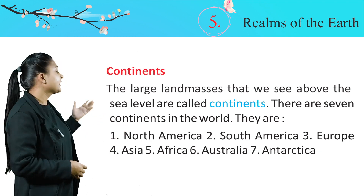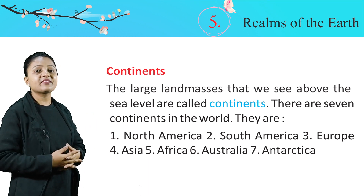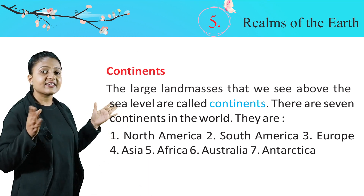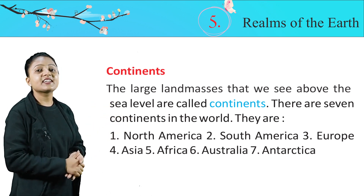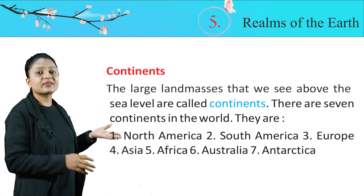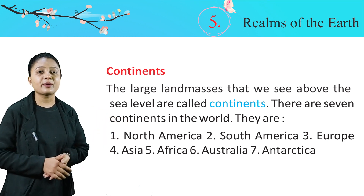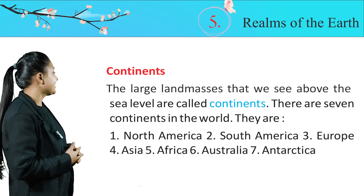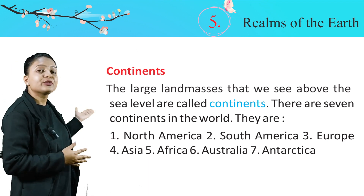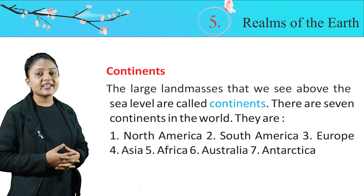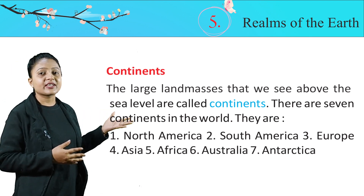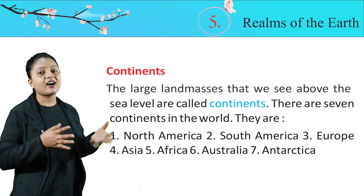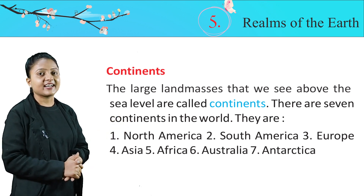Continents. The large land masses that we see above the sea level are called continents. There are seven continents in the world. They are North America, South America, Europe, Asia, Africa, Australia, and Antarctica. Humare total seven continents hain: North America, South America, Europe, Asia, Africa, Australia, and Antarctica.